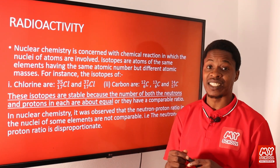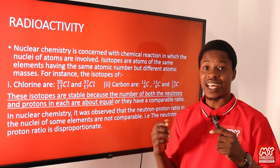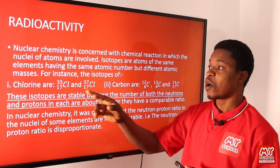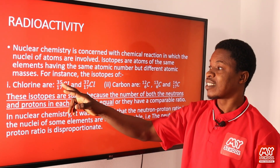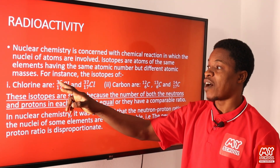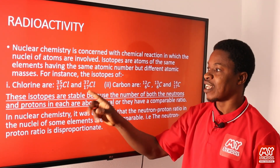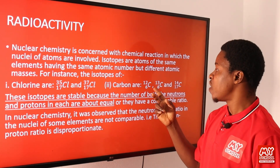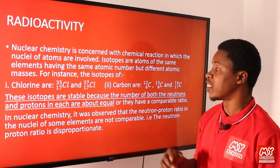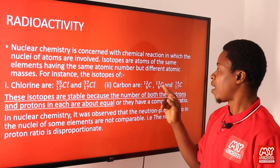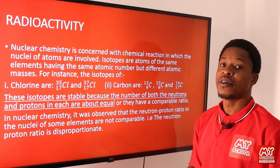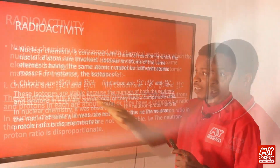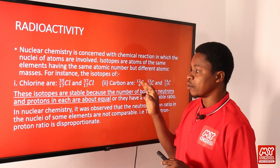The difference in mass number is due to a different number of neutrons. For instance, the isotopes of chlorine are chlorine-35 and chlorine-37. Carbon also has about three different isotopes: carbon-12, carbon-13, and carbon-14.